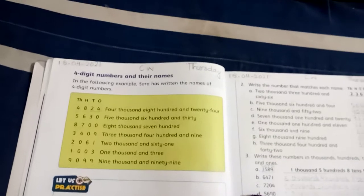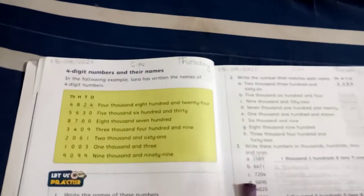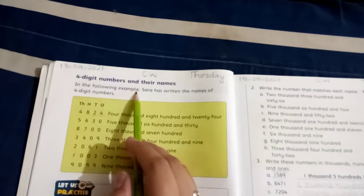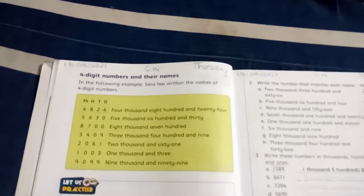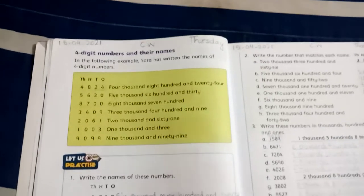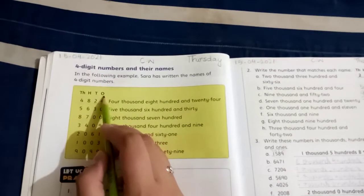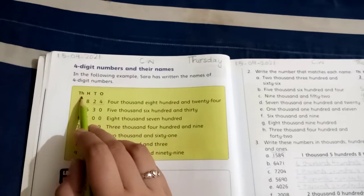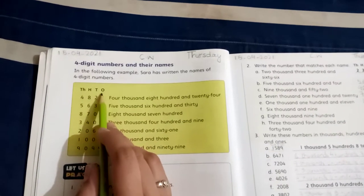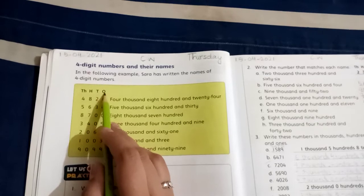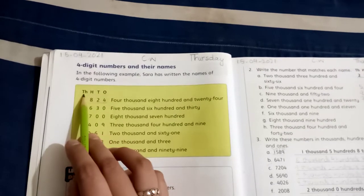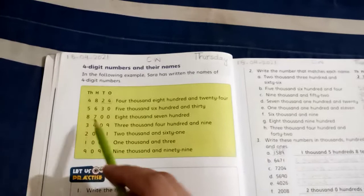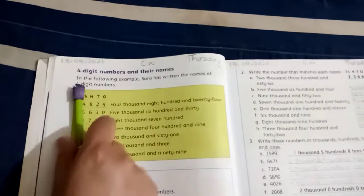We will learn about the numbers that are up to four digits and we will write their names. In this green box, Sarah has written the names of four digit numbers. She has written the places of their numbers: this is ones, this is tens, this is hundreds, and this is thousands. She has written the short form of these numbers. Once you write T, tens you write T, hundreds you write H, and thousands you write TH.